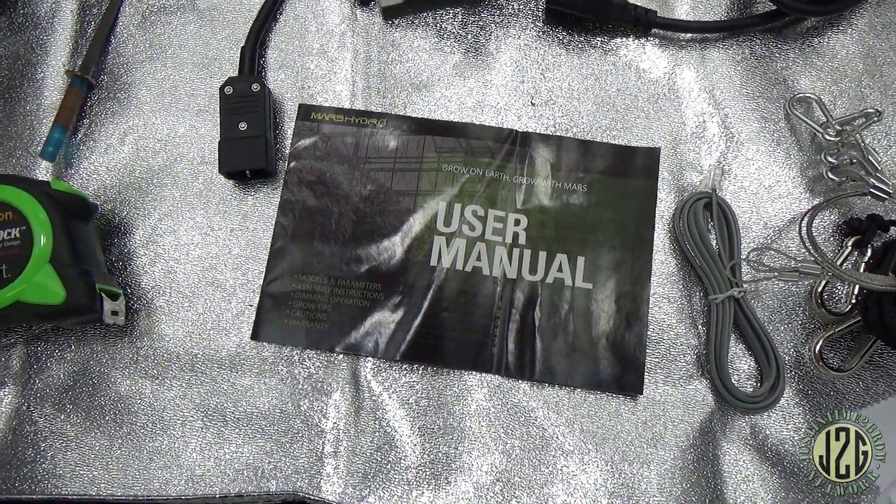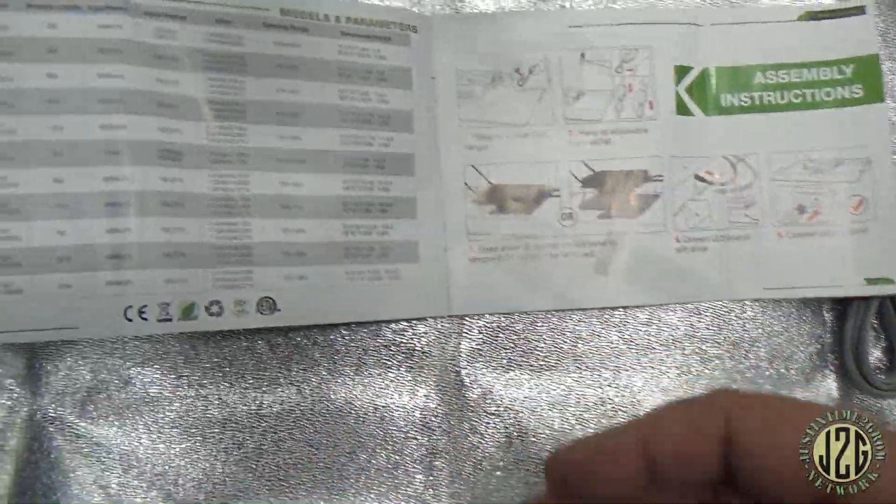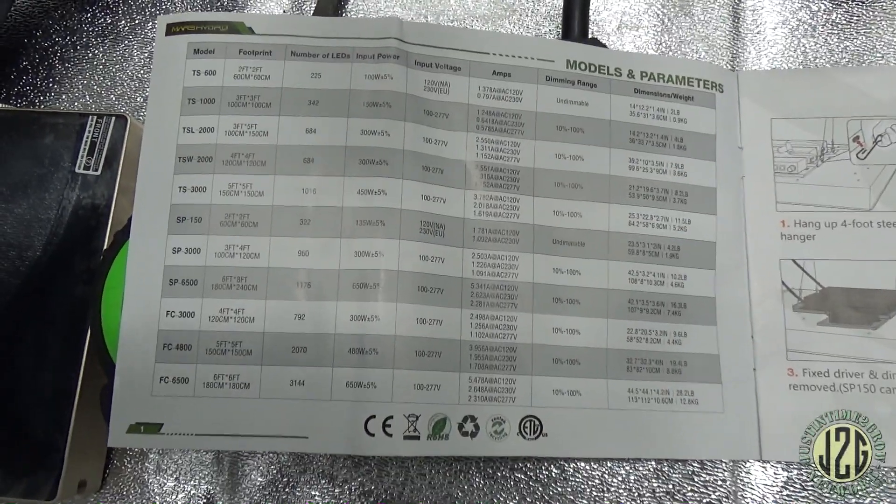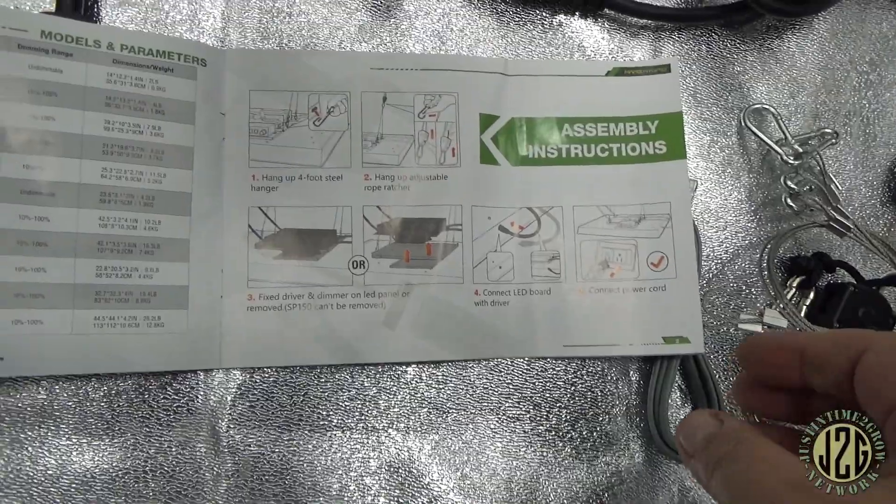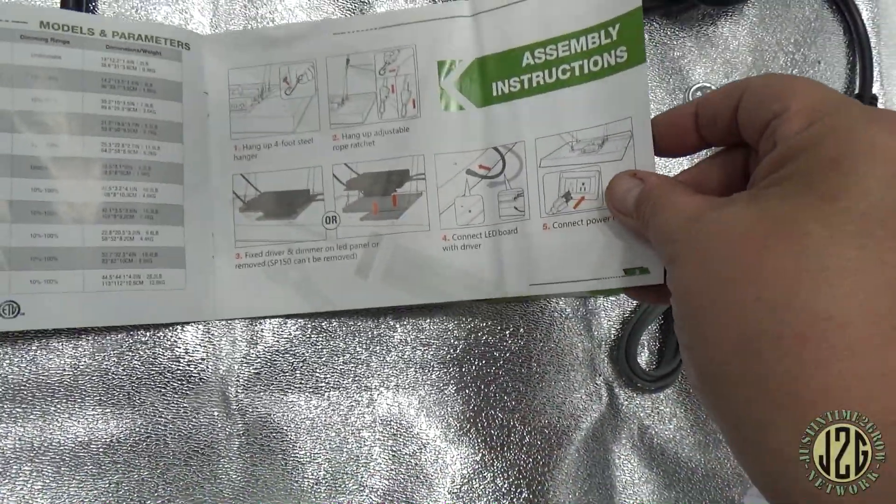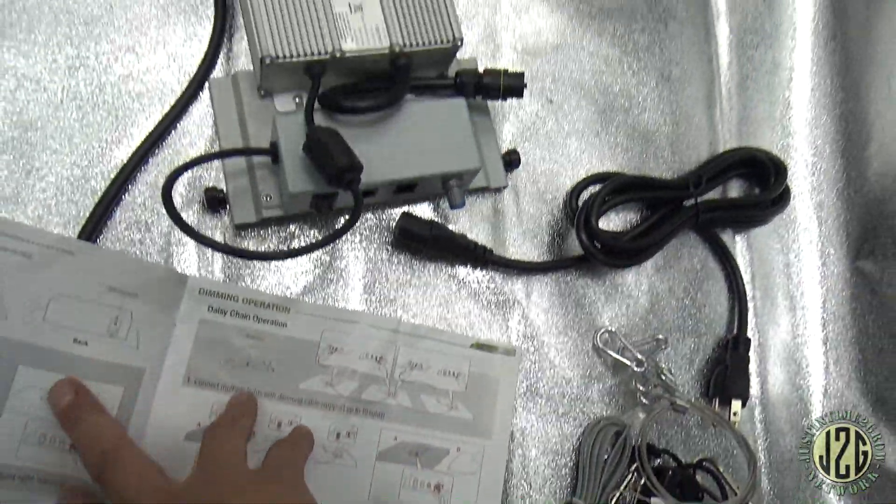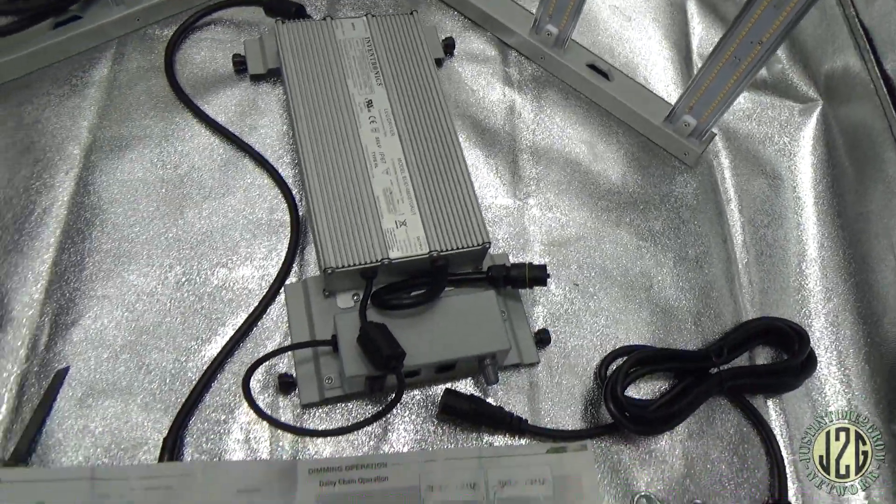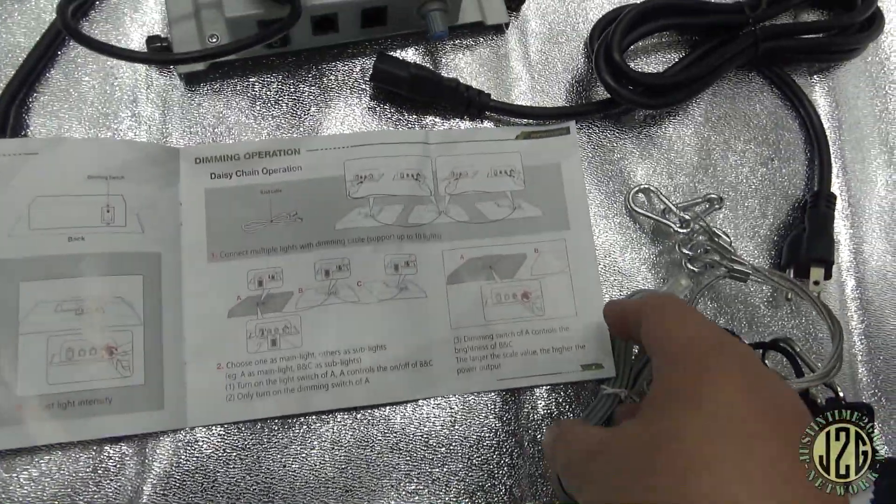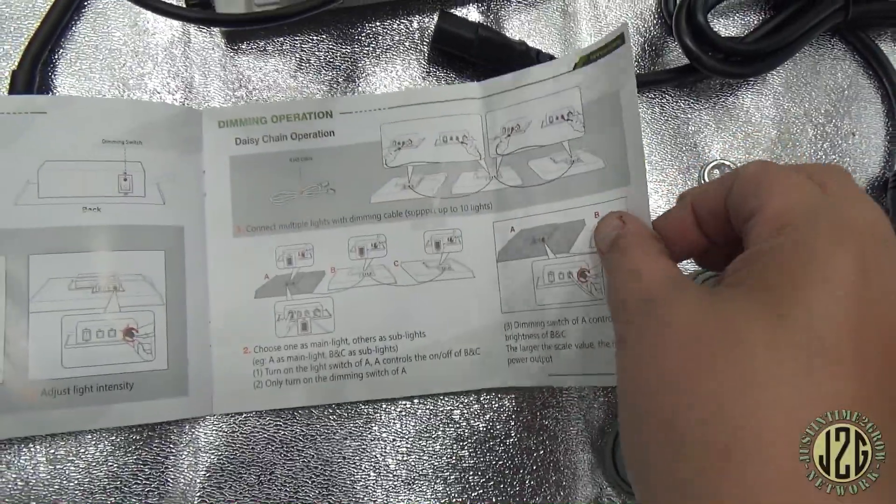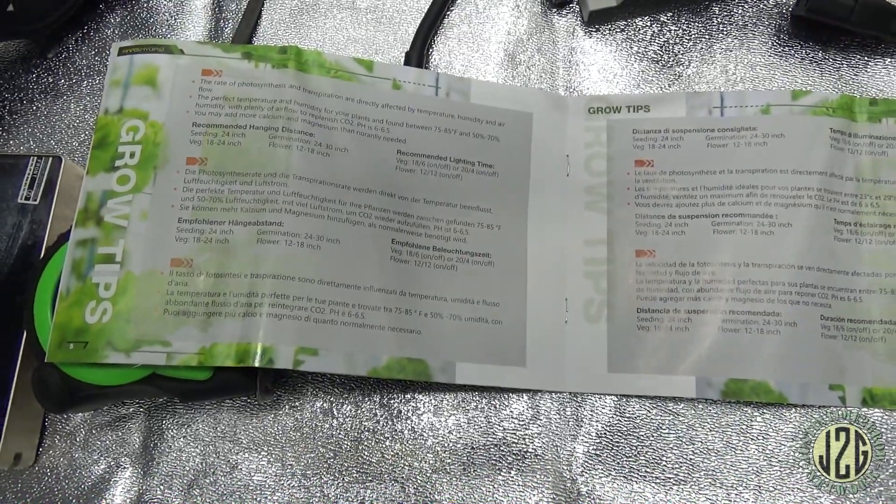Now we do have the user manual, can't forget to go through that here real quick. We've got all their different models, you can pause if you want to read that. Assembly instructions, it's pretty straightforward to be honest, it's not really hard at all. And you can actually run the driver attached or detached either way. Dimming operation, that's super self-explanatory. Growing tips, suggested heights and things like that.